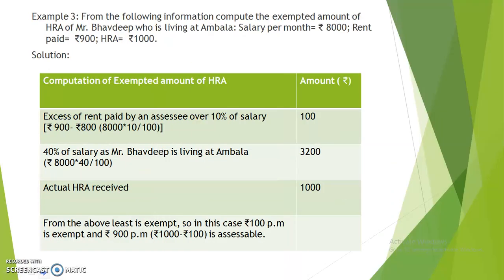In the third example, his salary per month is Rs. 8,000, rent paid by him is Rs. 900, and actual HRA received is Rs. 1,000. Excess of rent paid by Mr. Bhavdeep over 10% of salary: Rs. 900 minus Rs. 800 equals Rs. 100. 40% of salary is Rs. 3,200. Actual HRA received is Rs. 1,000. The least is exempt, so Rs. 100 per month is exempt and Rs. 900 per month is assessable.